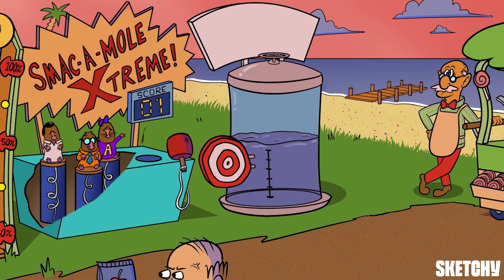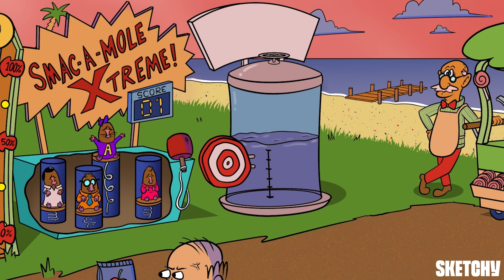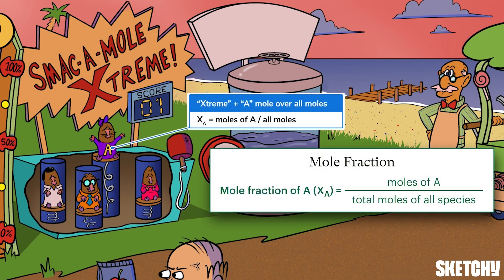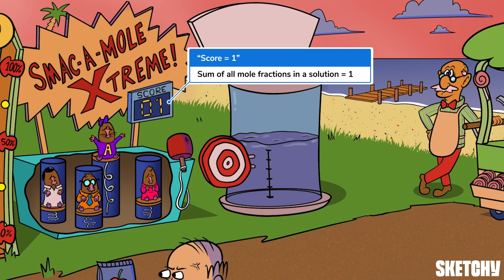If showing off brute strength isn't enough for the patrons at the mole fair, they can test their reflexes at Smack-A-Mole. These moles above and below the table should remind you of mole fraction, represented by the capital letter X. Mole fraction is the portion of total moles in a solution that is made up of a specific component — most often the solute. You calculate the mole fraction of your component of interest, A, by taking the moles of A over the total moles of all species. Since the denominator includes all moles, even moles of A, we should include that buddy up top in our count. The scoreboard showing one point lets you know that the sum of all mole fractions in a solution adds up to one.